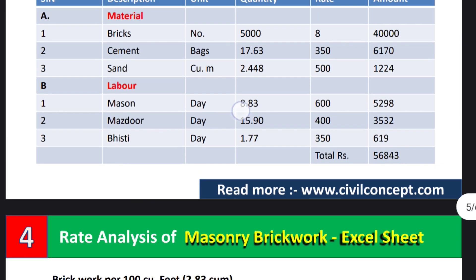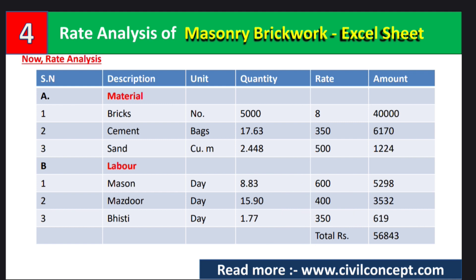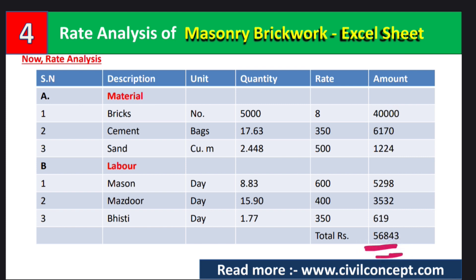Applying the rates to the calculated labor quantities — mason at 600, mazdoor at 400, and BISTI at 350 per day — we get amounts of 5,298, 3,532, and 619 respectively. Adding all material and labor costs gives a total of rupees 56,843 for 10 cubic meters of brick masonry.